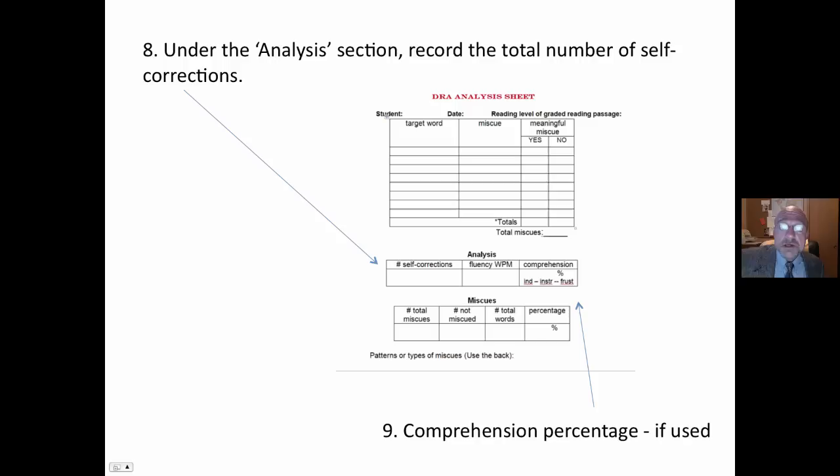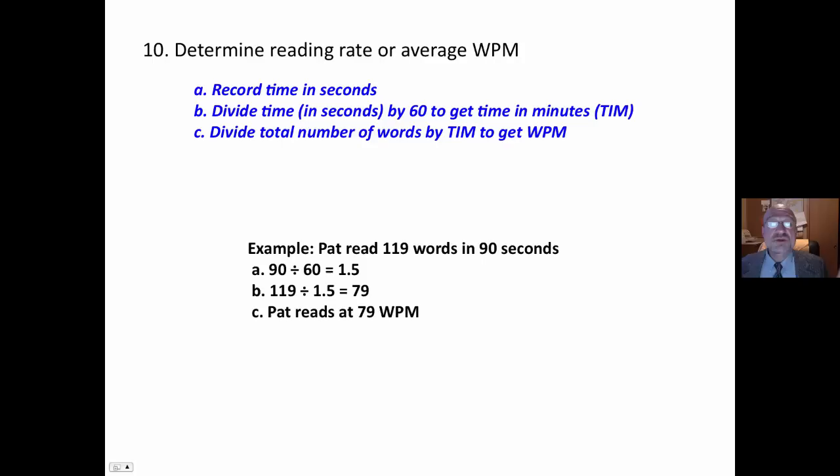Under the analysis section, I record the total number of self-corrections. And again, I like to see this SC. That represents mature reading behavior. If I choose to use the comprehension section, I can record the percentage and the level. And we'll talk more about comprehension in another video.